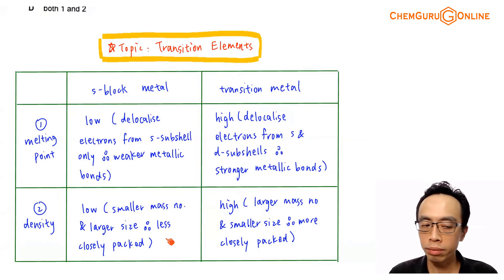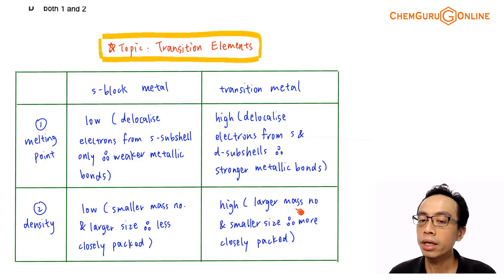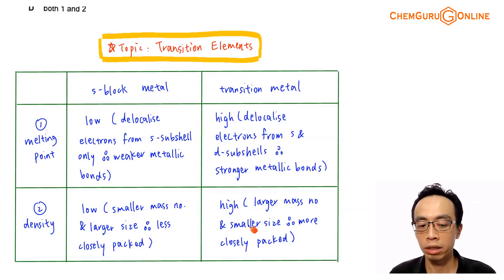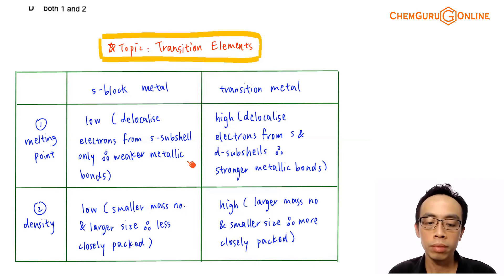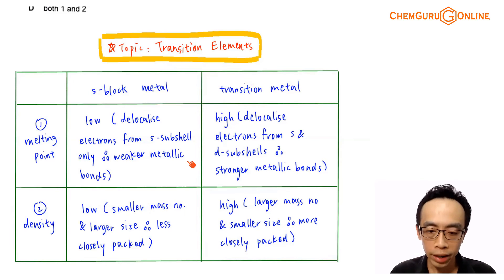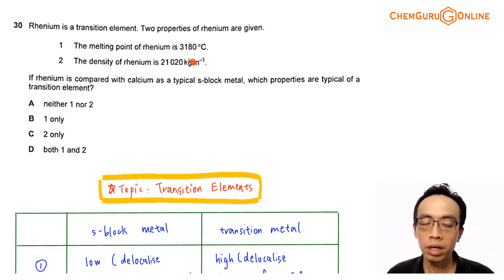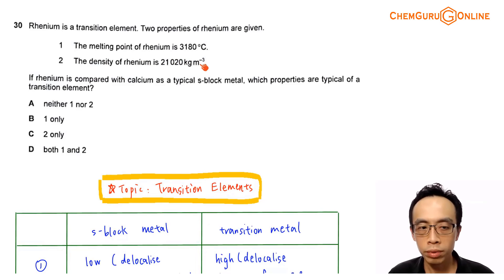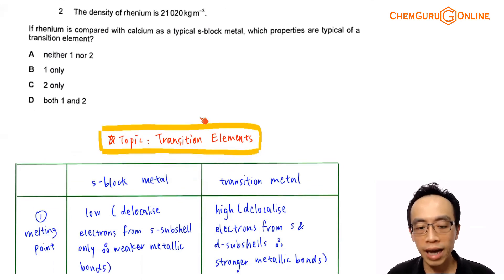Transition metals will have a higher density because the mass number for transition metal atoms is bigger and the size of the transition metal atom is also smaller compared to S-block metal. So per unit volume, transition metal atoms can be packed more closely, giving a higher density. The density of rhenium — 21020 kg per meter cube — is a very high value, so the second property is also typical of a transition element.